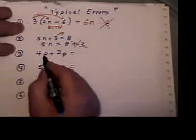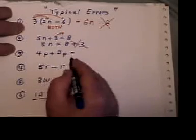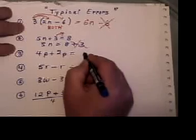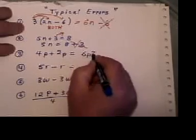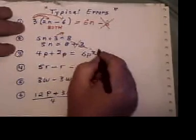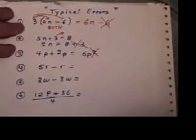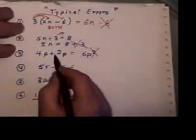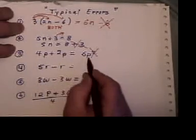The next error, people will say 4p plus 2p is 6p squared. Error. You're not multiplying p times p, so the correct answer would be 6p, not 6p squared.